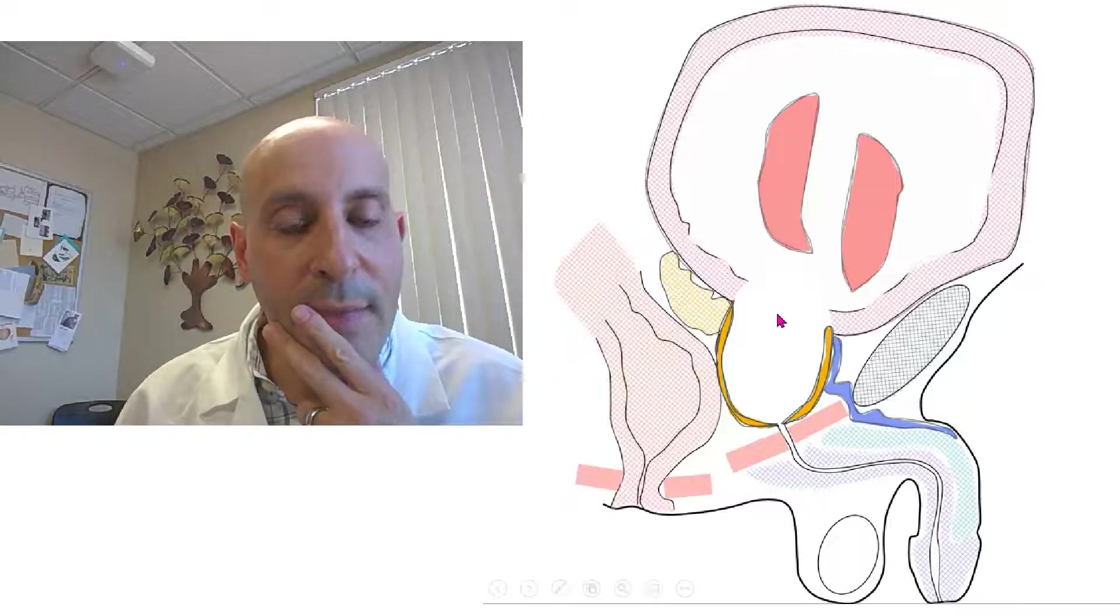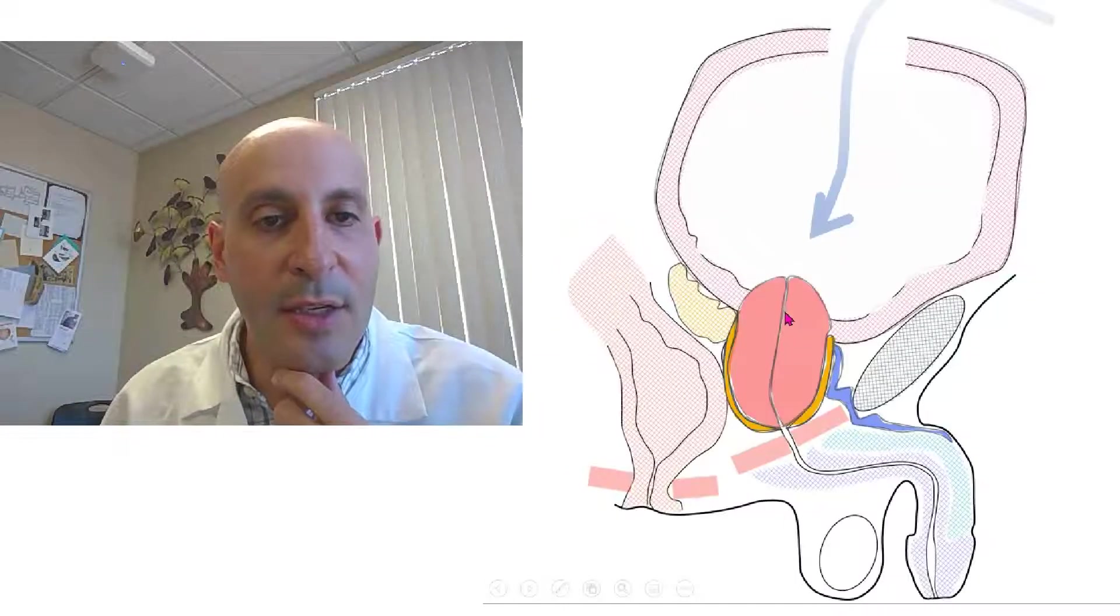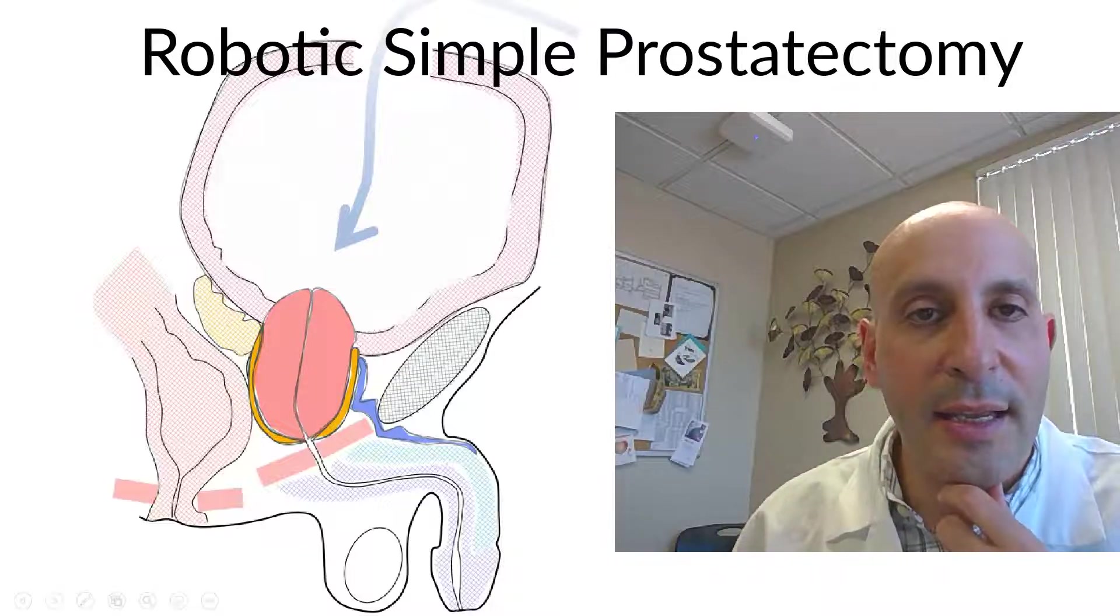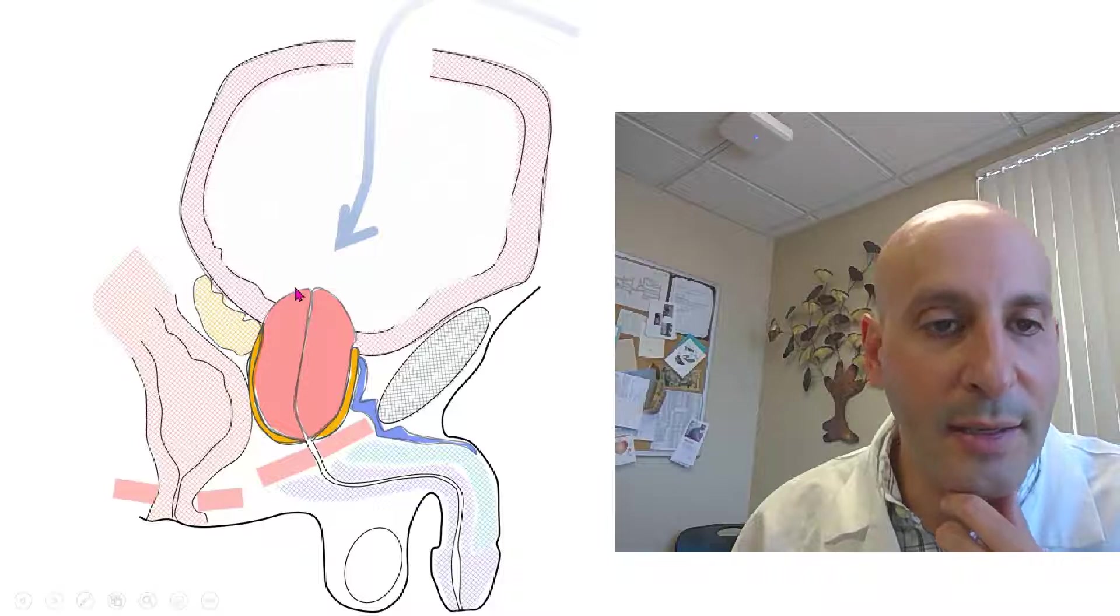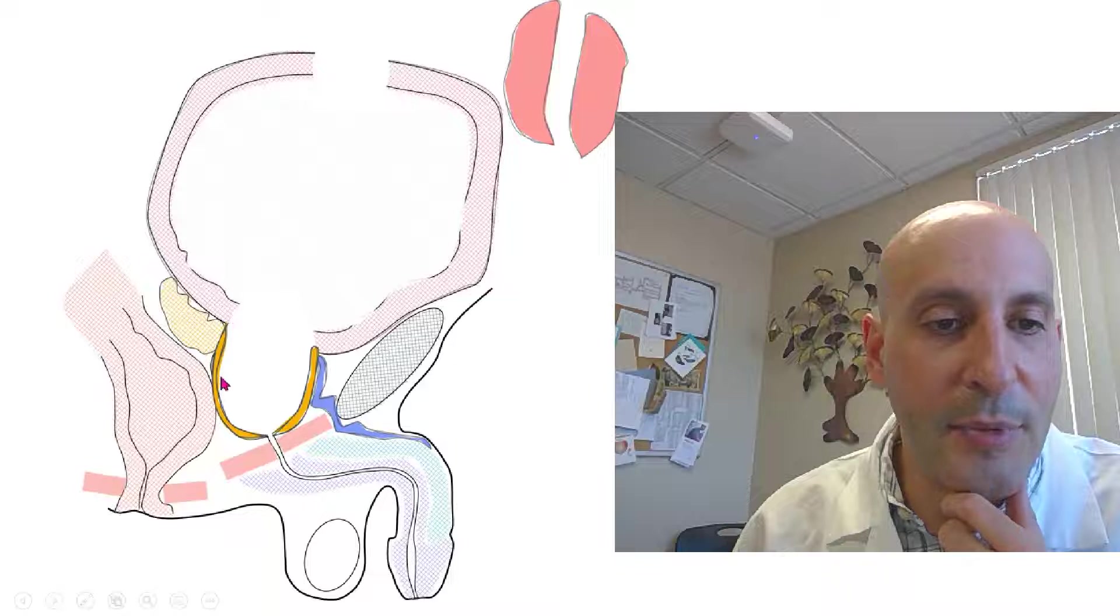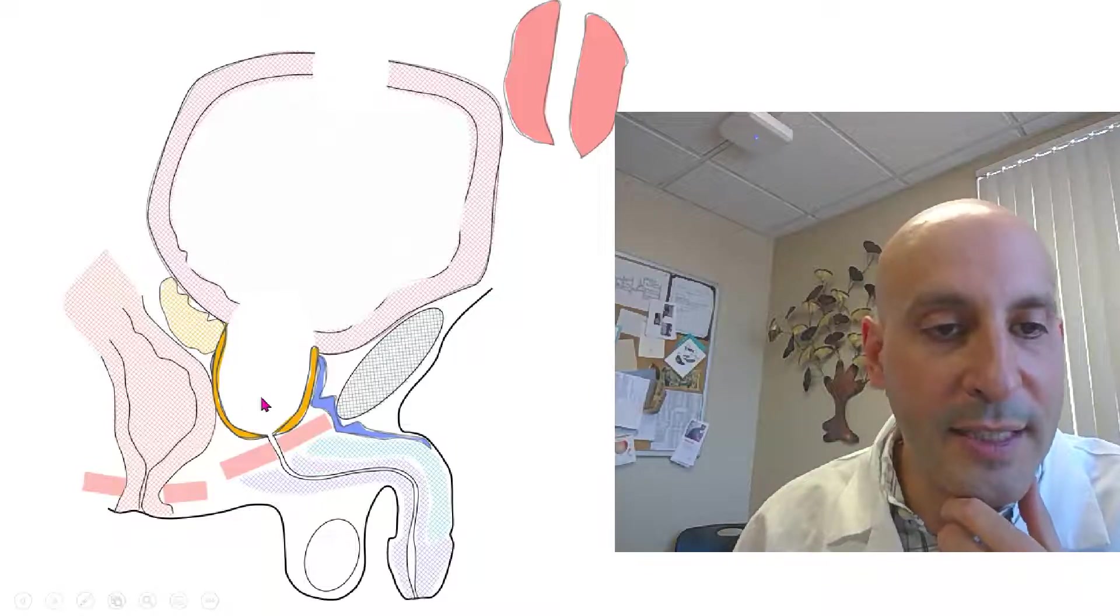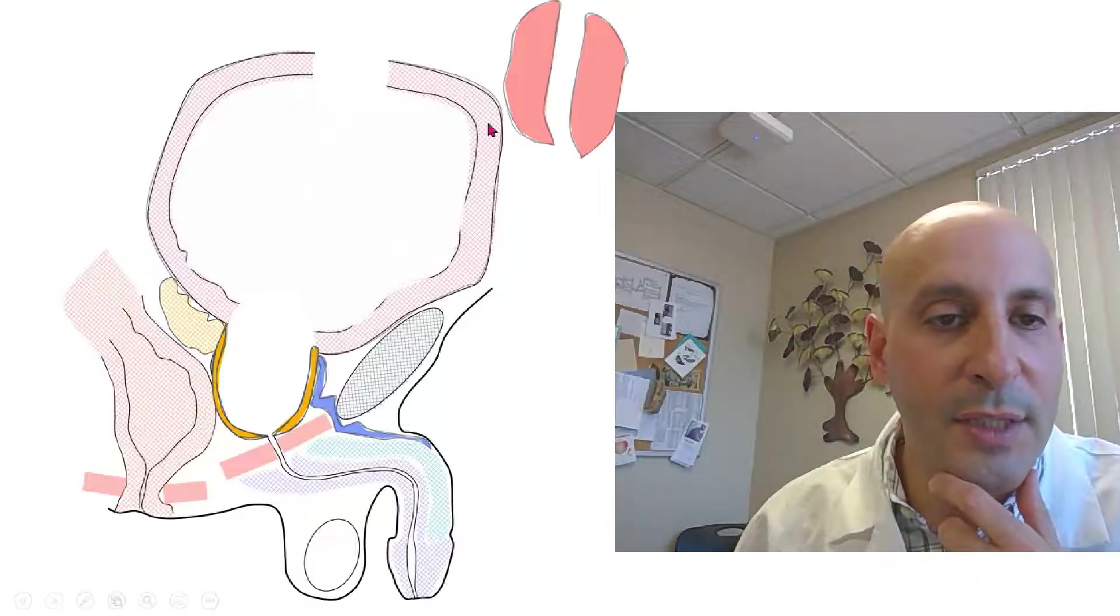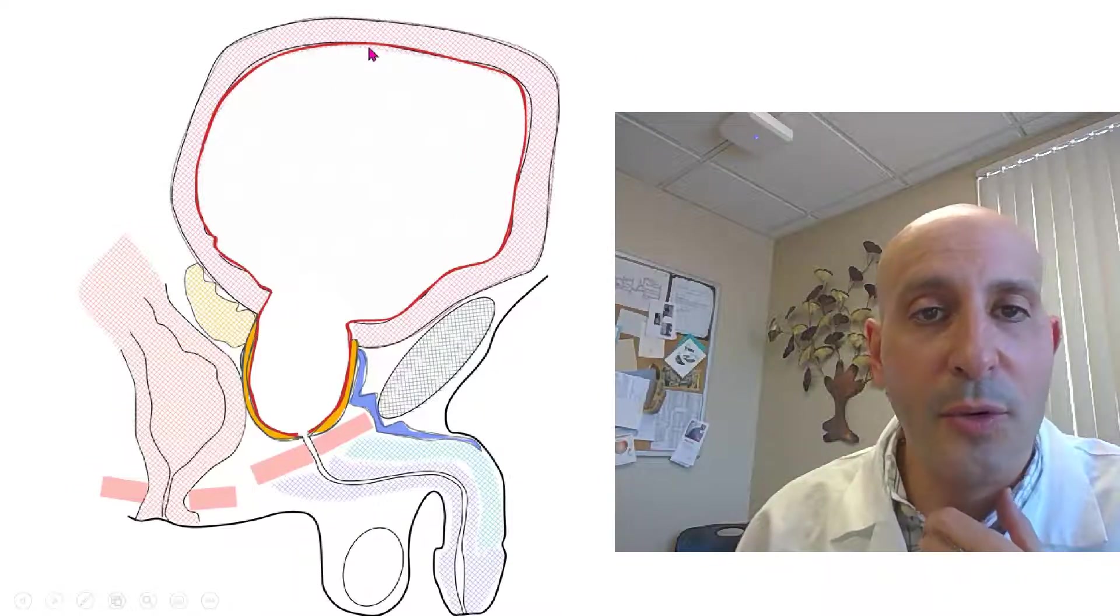We can accomplish the exact same thing with a robotic procedure. We make little cuts on your belly and we open the bladder. We go in the bladder and we do the same thing. We carve out that separation between the outer capsule of the prostate. We scoop out the interior. Those internal lobes of the prostate get removed. The bladder is stitched up again.